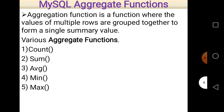So first of all, what is an aggregate function? An aggregate function is a function where the values of multiple rows are grouped together to form a single summary value. Aggregate functions are used with the GROUP BY clause and are basically used to summarize the result according to the need in a query.